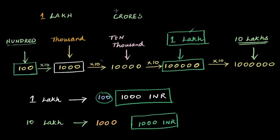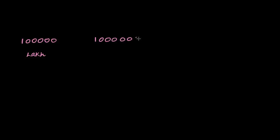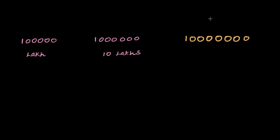Now that you know these numbers, what about a crore? You probably know that a crore is much bigger than a lakh, but how big is it really? Let's take the numbers where we left off: one followed by four zeros is ten thousand, one followed by five zeros is a lakh, one followed by six zeros is ten lakhs — which in the international system we call a million. And then I'm going to write this out: one followed by seven zeros. This is my first eight-digit number, and this is what we call one crore.